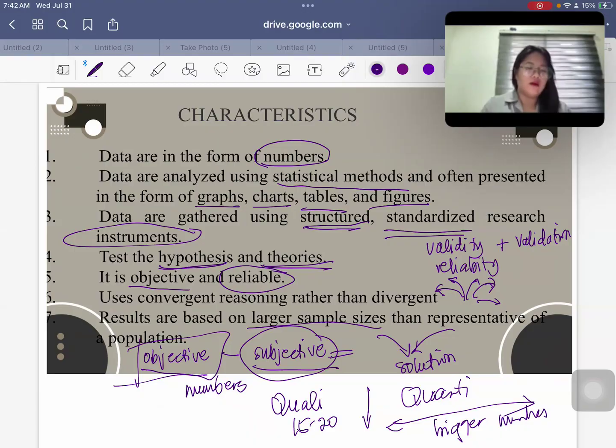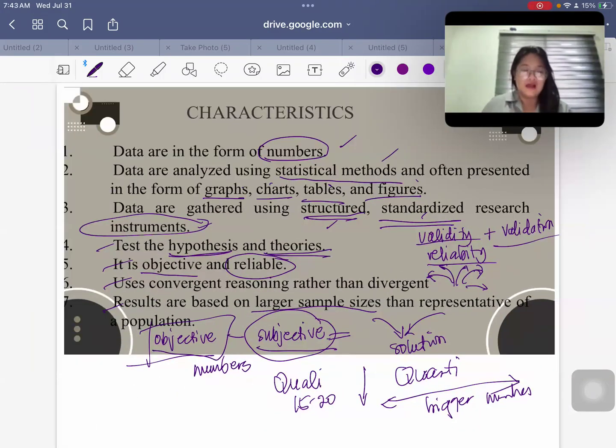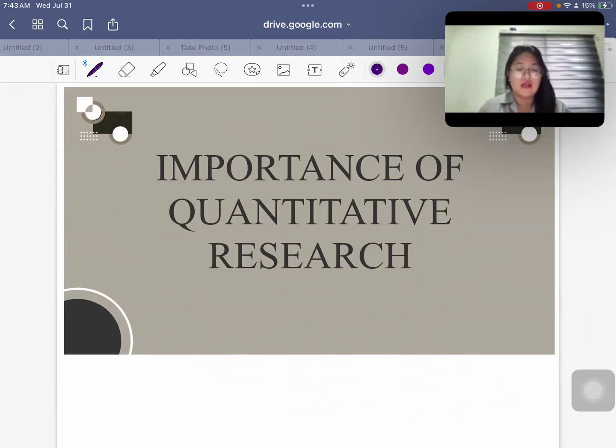So again, data is a form of numbers. Data are analyzed using statistical methods and use graphs, charts, tables and figures. Data are gathered using structured standardized research instruments that you cannot just formulate out of the blue because you have to check its validity and reliability and you would have it validated as well. There is the testing of the hypothesis. We also have to be objective and reliable. We use convergent reasoning rather than divergent reasoning. And then results are based on larger sample sizes compared to qualitative, wherein you could have smaller ones.